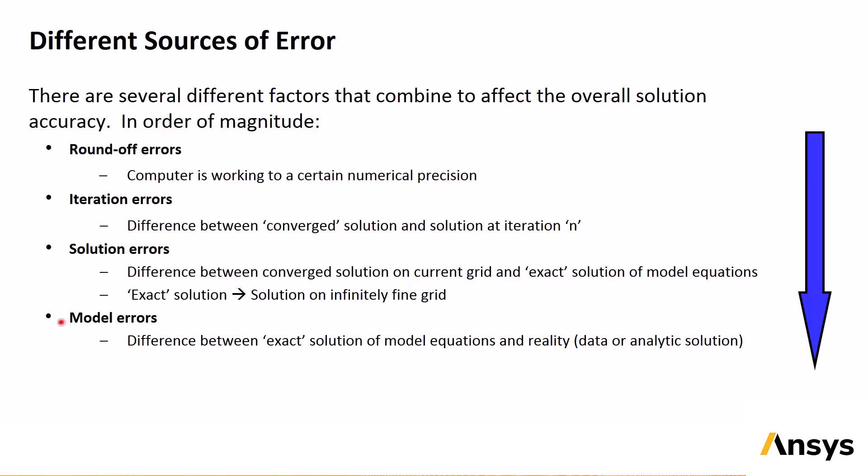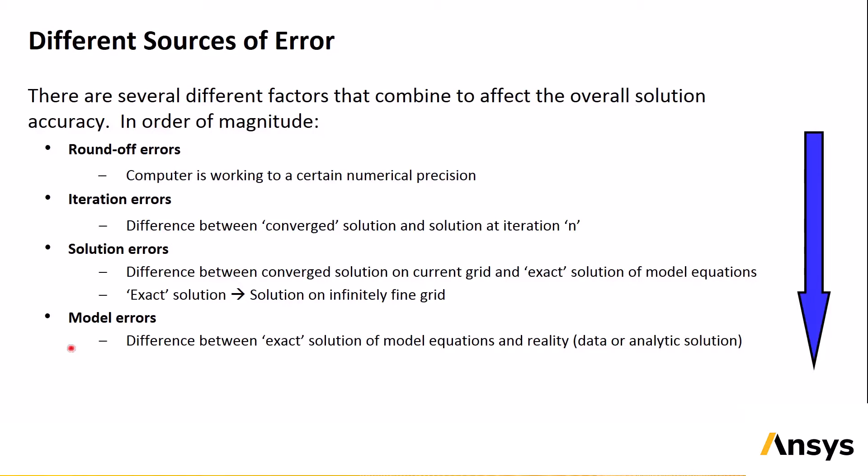Finally, there are modeling errors, which are the difference between physical reality and the exact solution of model equations on an infinitely fine grid. These errors often attract the most attention, but all other kinds of errors should first be eliminated. In the next slides, we'll discuss each type of error in more detail.